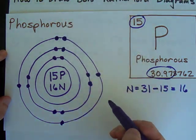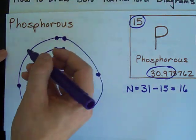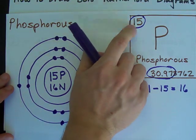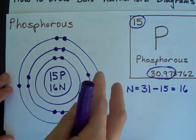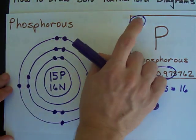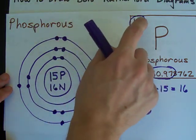And then you can put them into a fourth shell. Now, once you get past element number 20, it becomes a little trickier to do. You probably won't be asked to draw Bohr-Rutherford for anything after number 20.